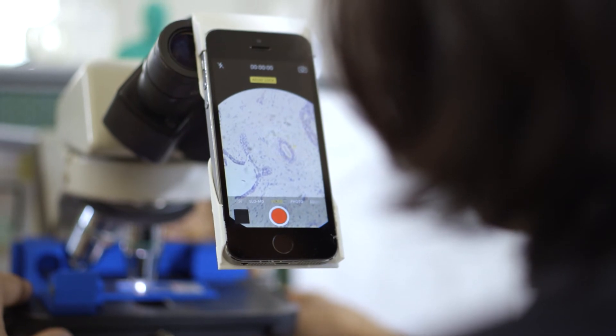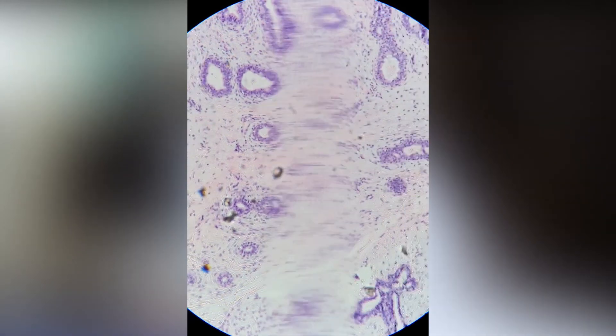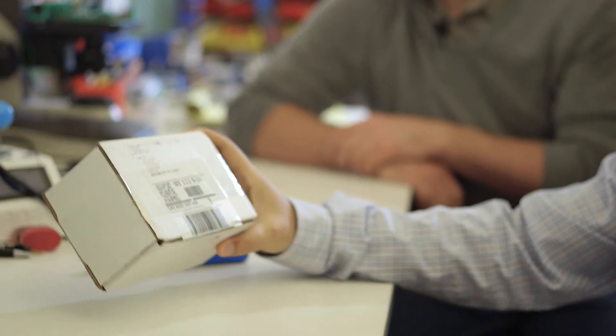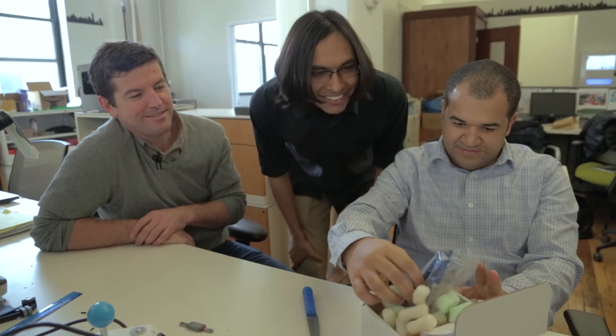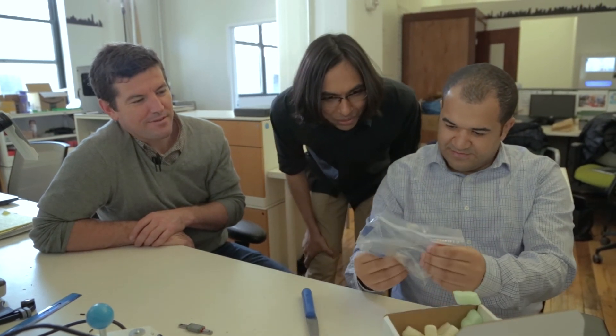This is actually version number six. The version we showed at the iShow was literally version number one, so we've gone from that iteration to other iterations. It looks nice—they printed nice.